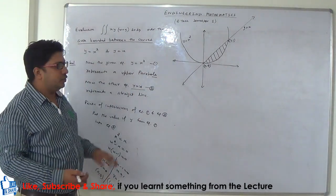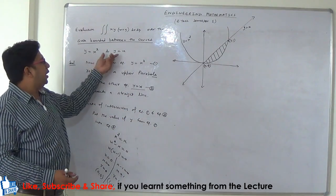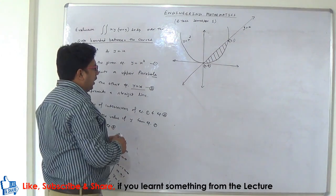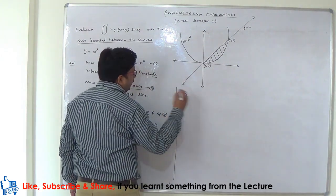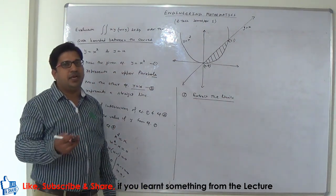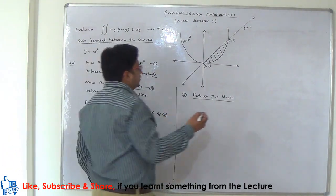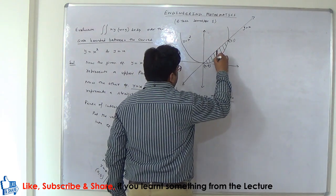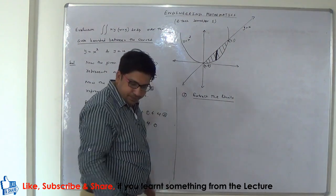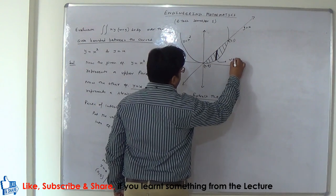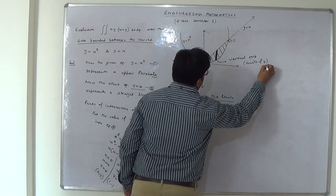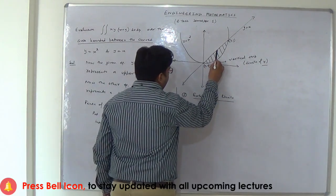First step: trace the curve. Second step: identify the region — done. Third step: extract the limits by using a strip. Either a horizontal strip or vertical strip can be used. In this case I will use a vertical strip. This is the vertical strip I will apply to extract the limits.